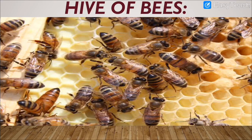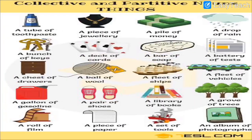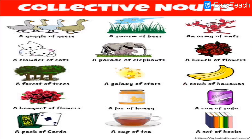We also saw collective nouns for sea animals, and collective nouns for things: pile of money, drop of rain, bar of soap, and many more. We saw partitive nouns together with collective nouns. Then we covered gaggle of geese, parade of elephants, and bunch of flowers — all from the previous lecture.